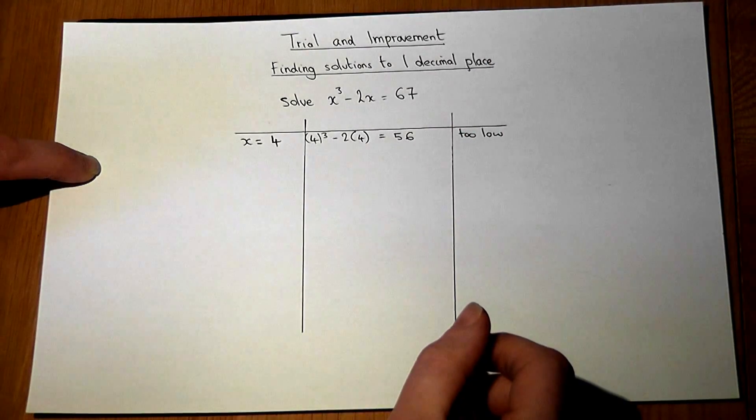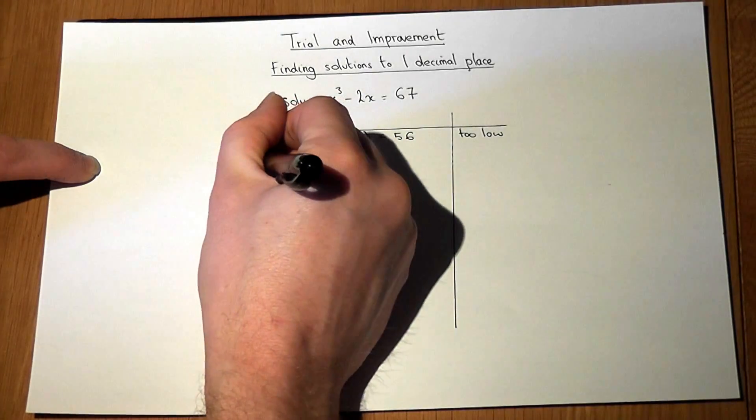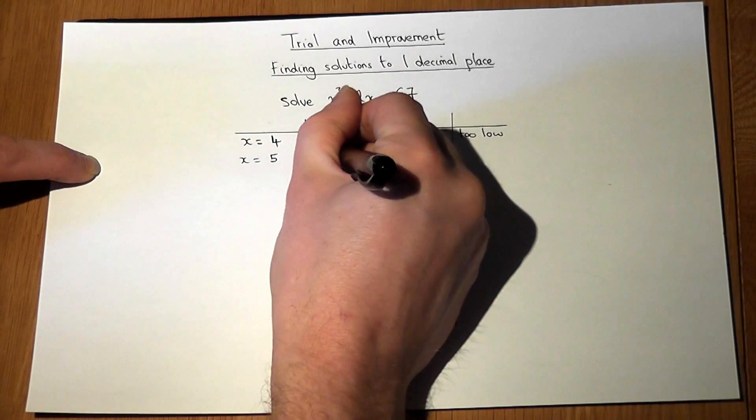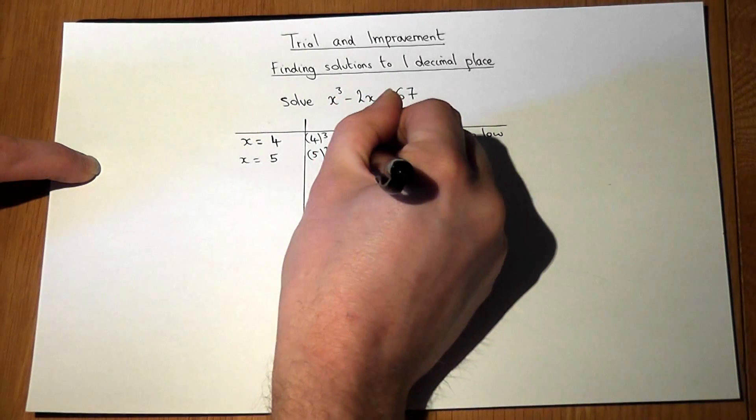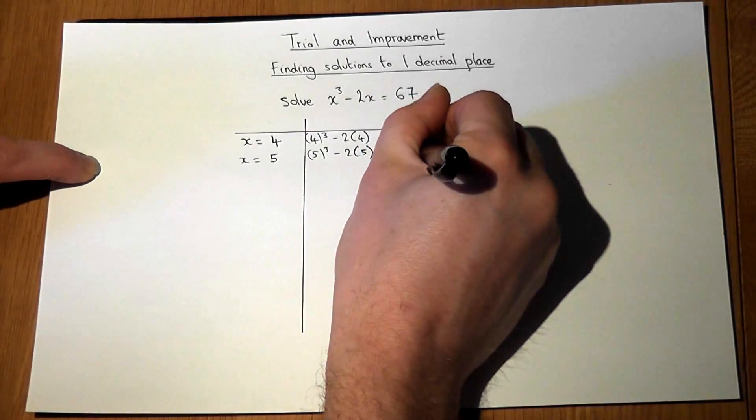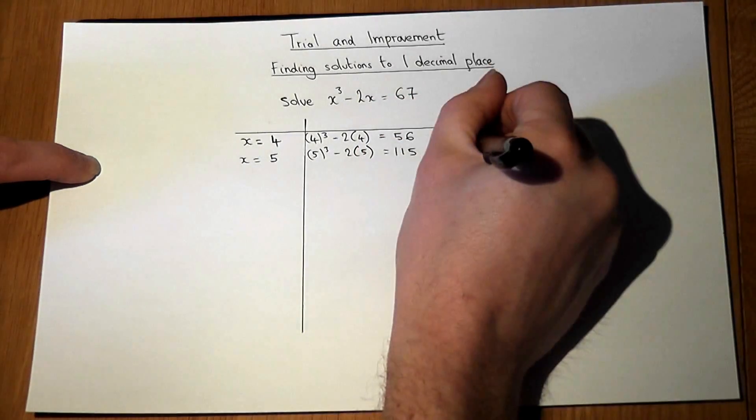So we must search for a value of x which is probably higher. So if we try x equals 5 and work out 5 cubed minus 2 times 5, then this works out to be 115. And this value is now too high.